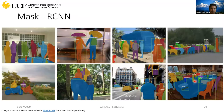Now we'll look at one interesting approach for instance segmentation that builds upon what we've already seen in class. If you remember the object detection lecture, we had the region proposal network, then we looked into Faster RCNN, and also discussed Faster R-CNN. It was trying to solve the object detection problem — given an image, it draws a bounding box around each instance of those objects.